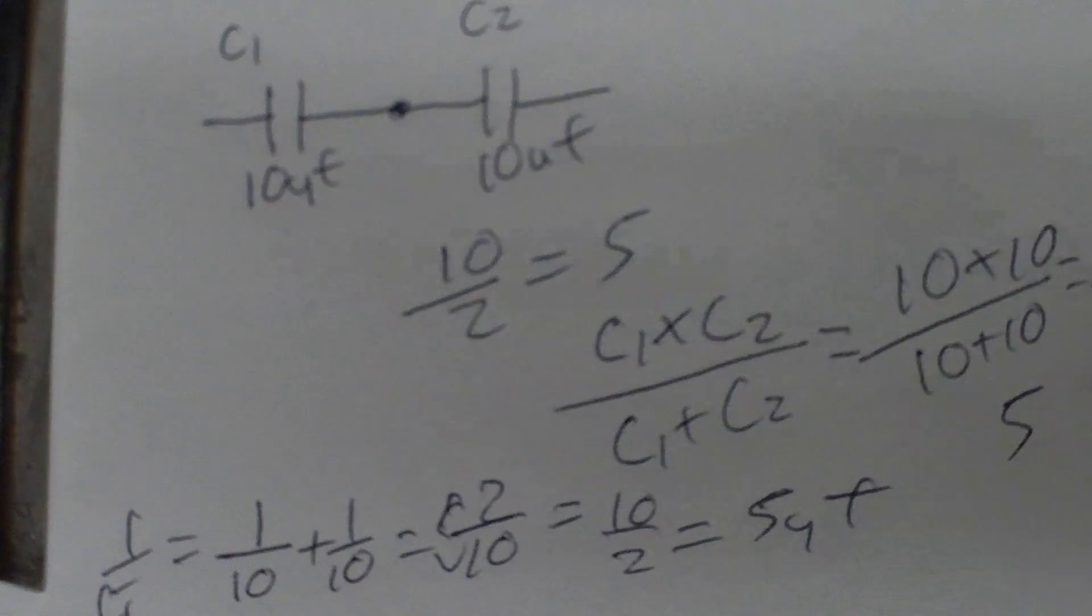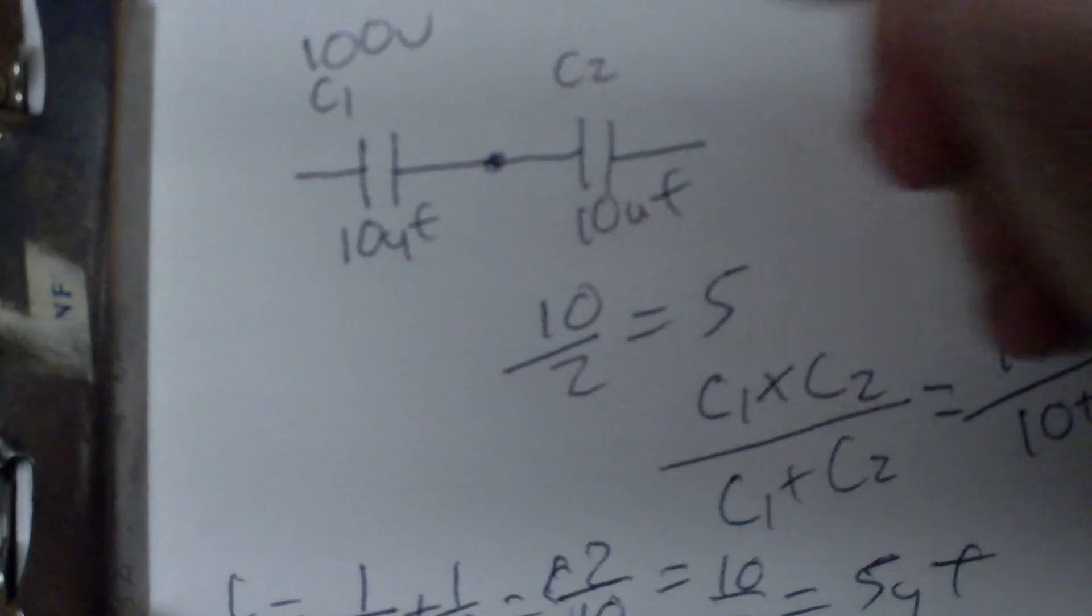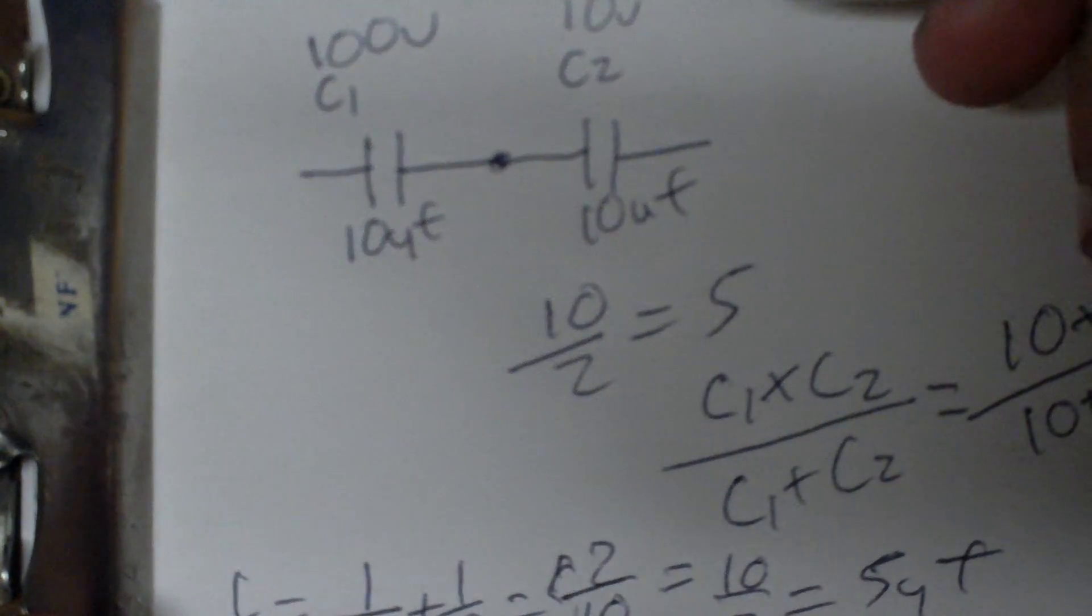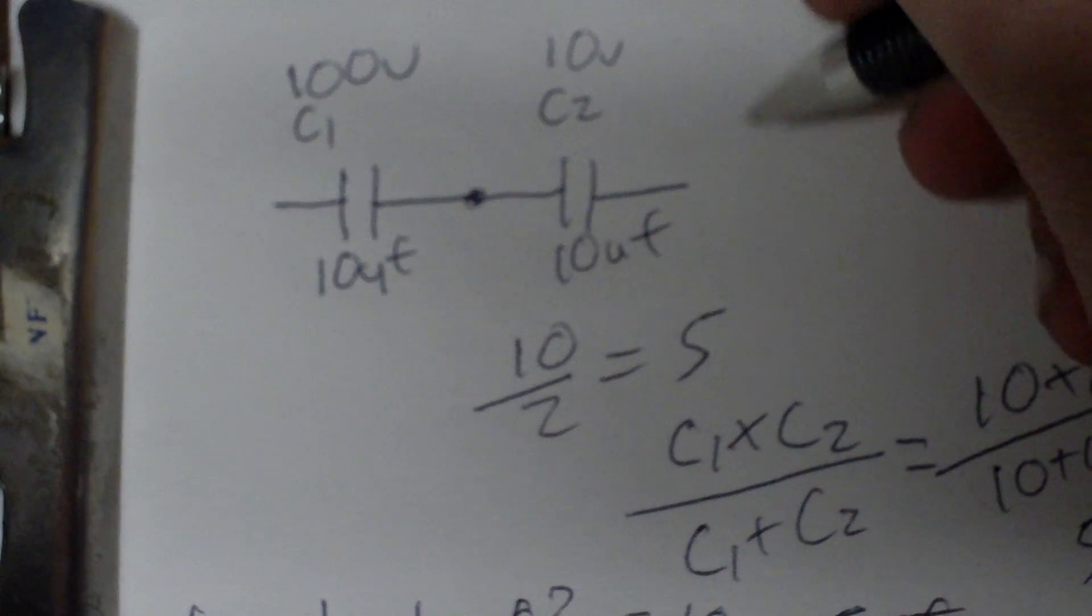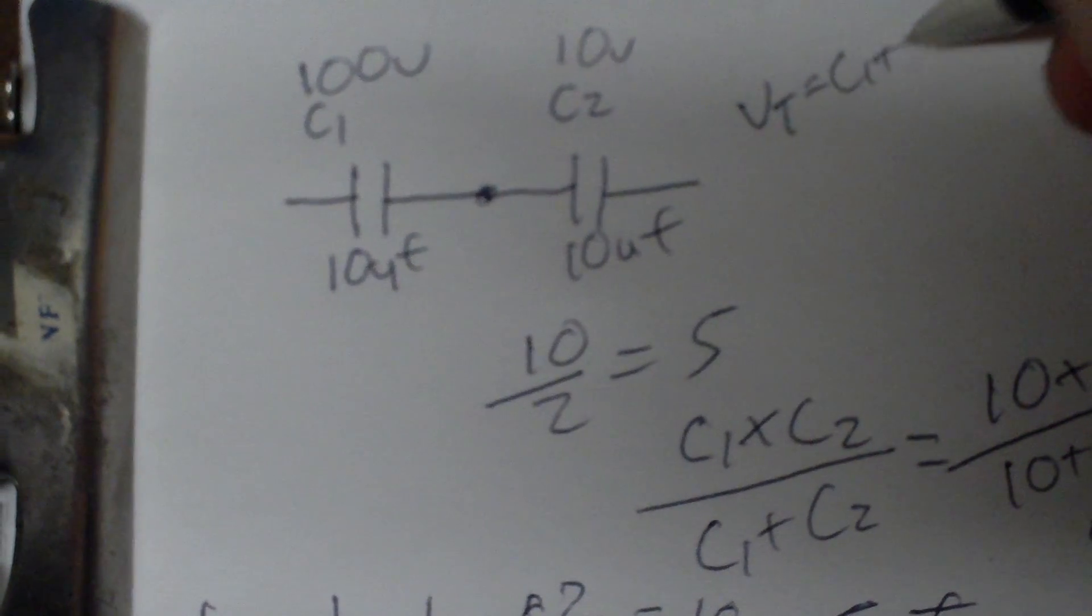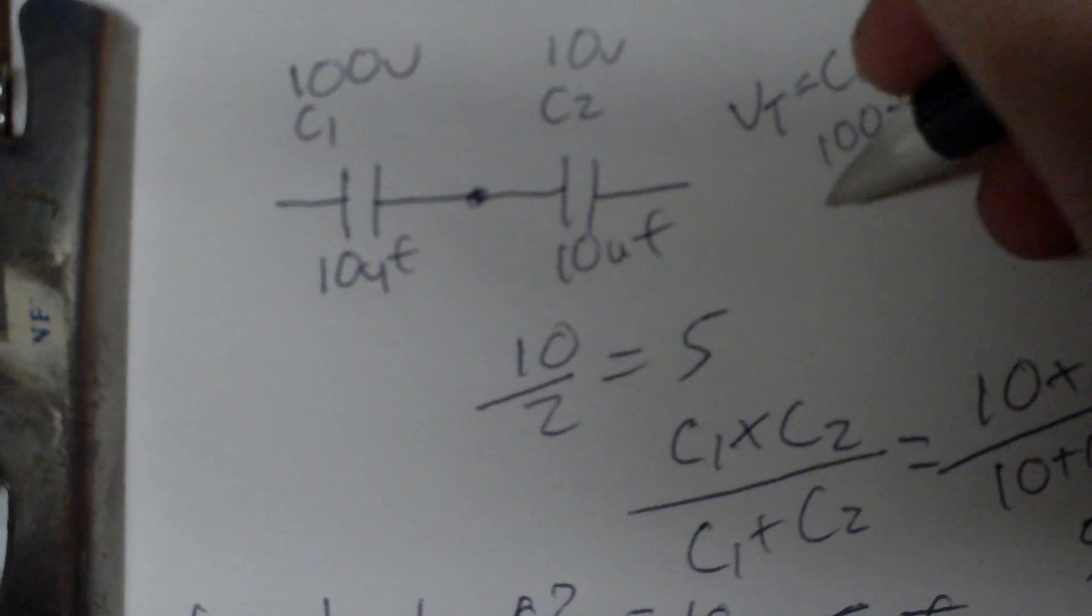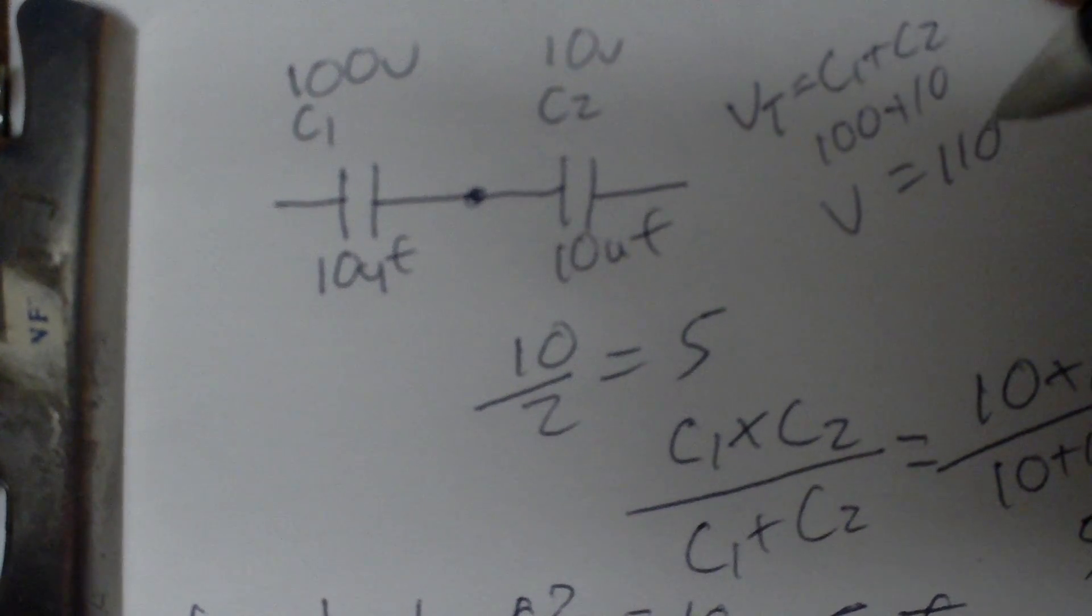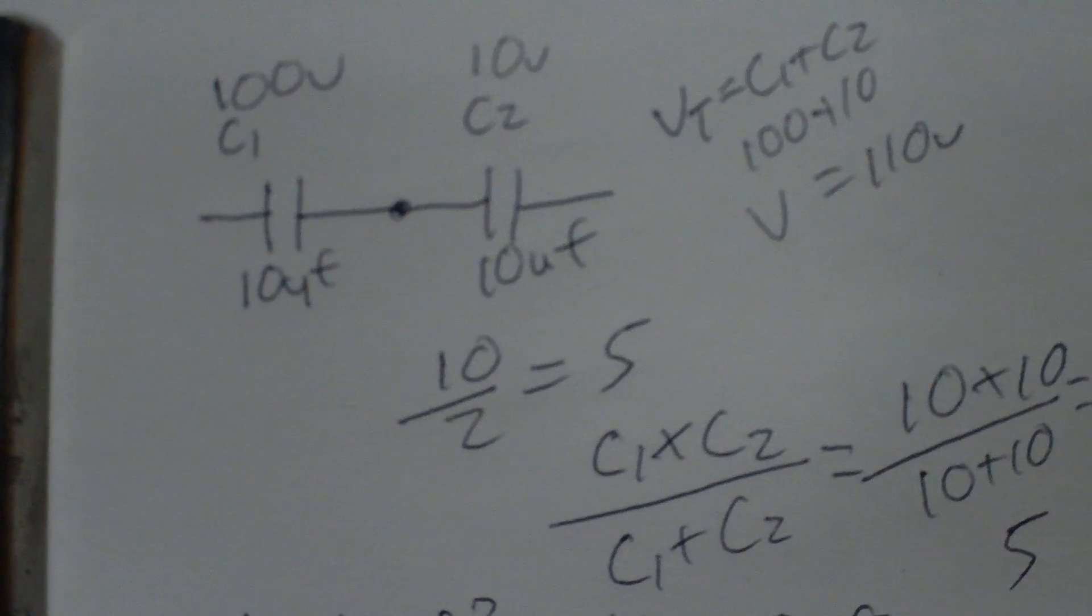Now, when they're in series, your voltage rating adds. Suppose this one's rated for 100 volts, this one's rated for 10, like in the last picture. So now, in this case, your voltage will equal C1 plus C2, which is 100 plus 10. So your voltage of this would be 110 volts. And that's how they are in series.